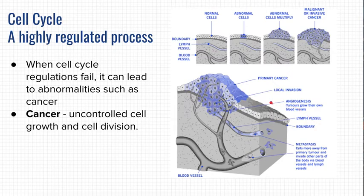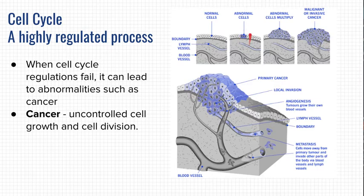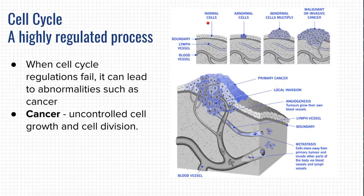Here you can see normal cells. Maybe these are skin cells, and maybe this person spent too much time in the sun without sunscreen, causing a mutation in these cells making them abnormal. One thing that abnormal cells do that normal cells don't is they stop respecting density-dependent inhibition. Normal cells stop dividing when there's no more room — like if you have a cut or scrape, skin stem cells divide to fill the gap, but stop when there's no more room. That's a rule that abnormal cells break.